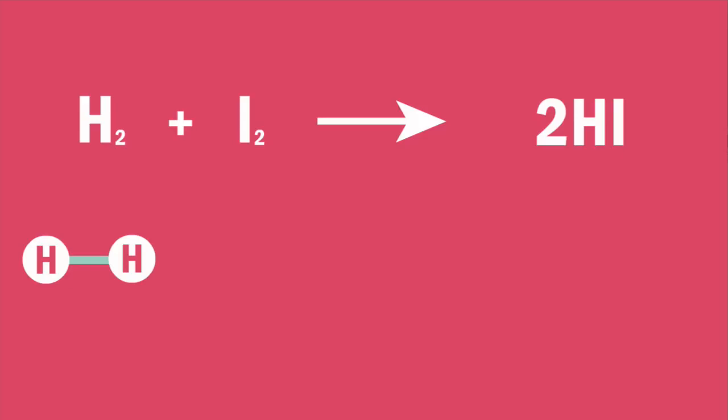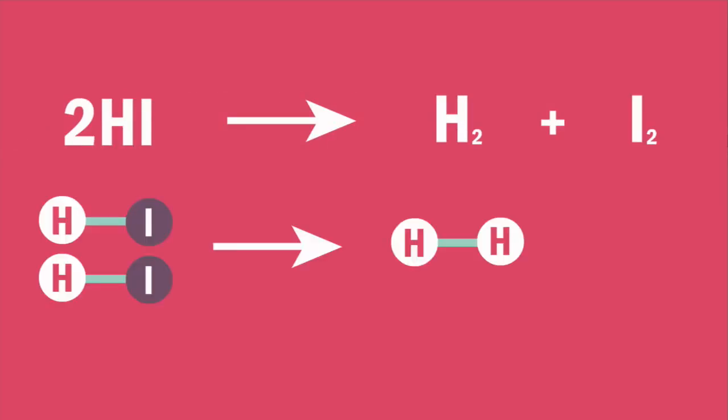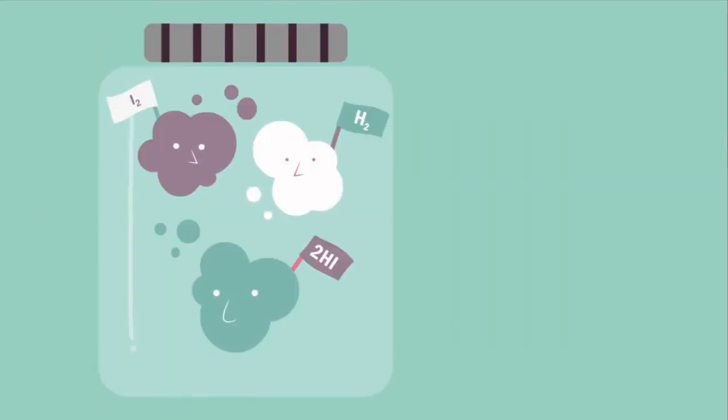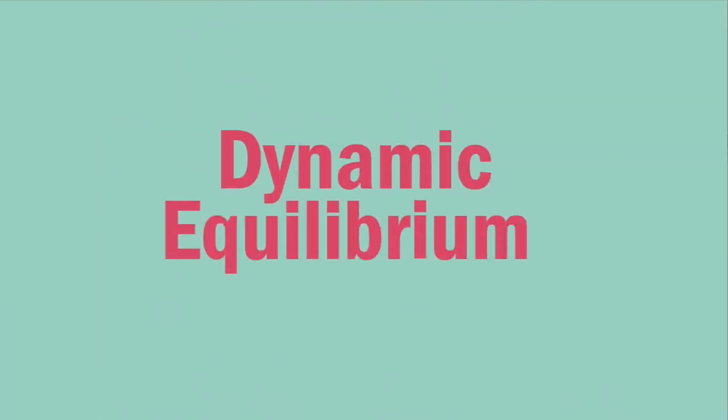So what is happening here? The reaction of hydrogen and iodine to produce hydrogen iodide is occurring at the same rate as the decomposition of hydrogen iodide to hydrogen and iodine. So there are no observable changes, although both the forward and reverse reactions are occurring. This reaction has not stopped, but rather has reached dynamic equilibrium.